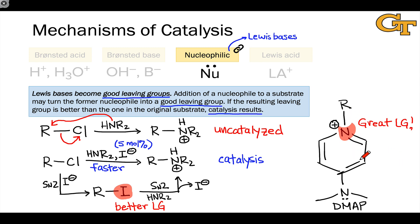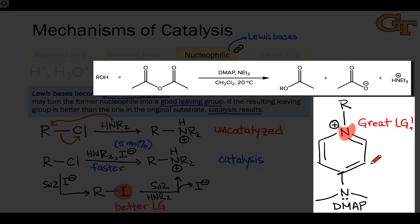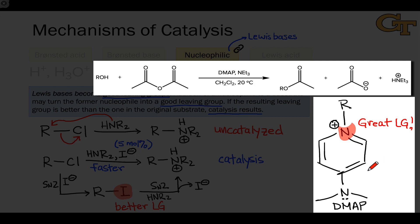So DMAP is often used, for example, in nucleophilic acyl substitution contexts where we've got some decent leaving group like a carboxylate within an anhydride. DMAP can displace the carboxylate, and this accelerates nucleophilic acyl substitution of the anhydride.